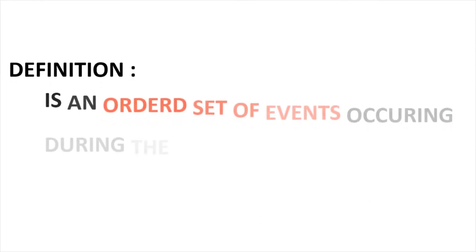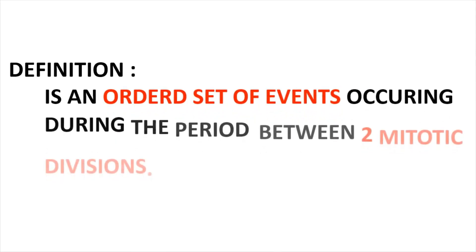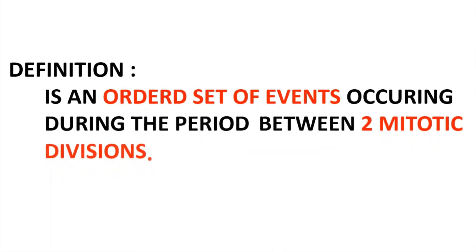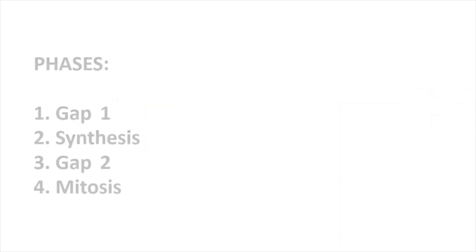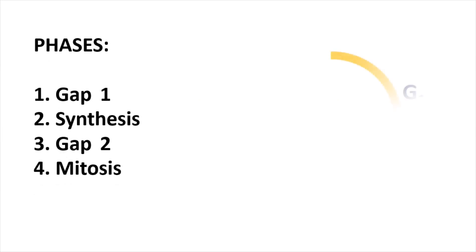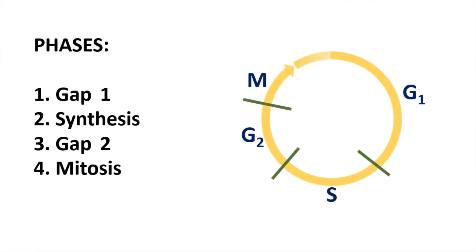The definition of the cell cycle is: it is an ordered set of events occurring in the cell during the period between two mitotic divisions. In simpler words, it is everything happening inside the cell between one mitotic division and the next. Here you can see the four phases: Gap 1, then the Synthesis phase, then Gap 2, and finally the Mitotic phase. On the right side you can see a graphical representation of the relative time each phase takes.